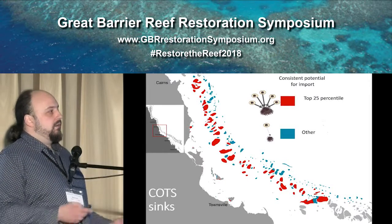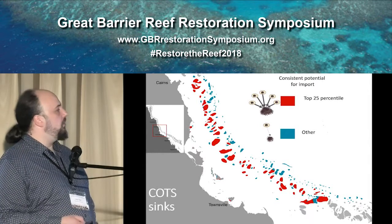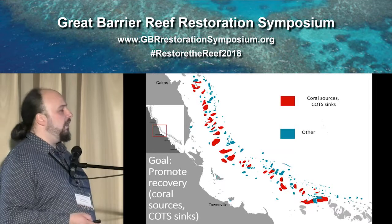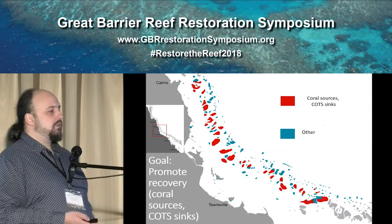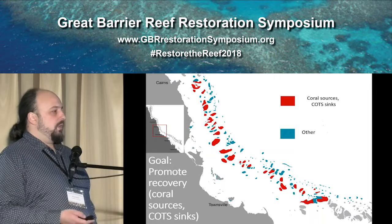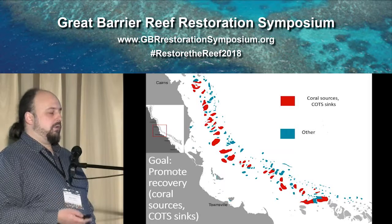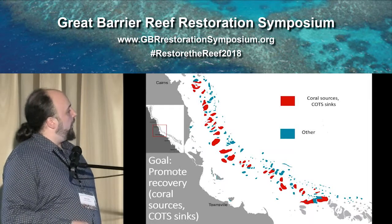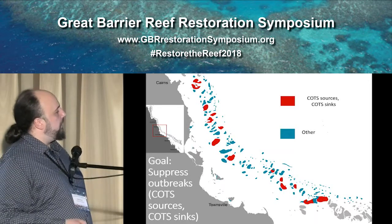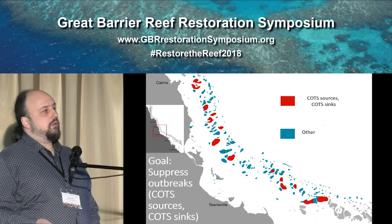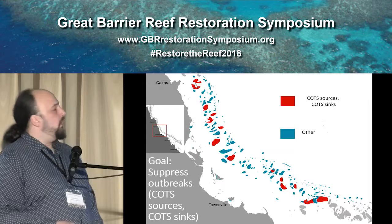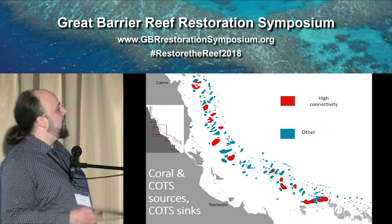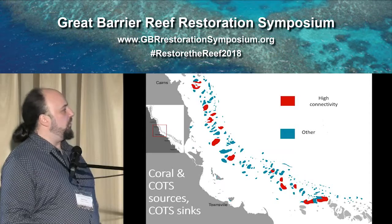We can combine these categories to come up with meaningful goals. For example, if you want to promote recovery, we look for coral sources because we want to promote recovery, but we can combine this with COTS sinks — these are sources that might be exposed to COTS larvae, so we go there, find if they have COTS, and if they do, we remove them, because that supports natural recovery processes through connectivity. Or if we want to suppress outbreaks, we go to reefs that are both COTS sources and COTS sinks — they're likely to have COTS and likely to make the situation worse. We can also combine all three categories to identify the highly connected reefs in the region, which are obviously important for both COTS and coral connectivity.